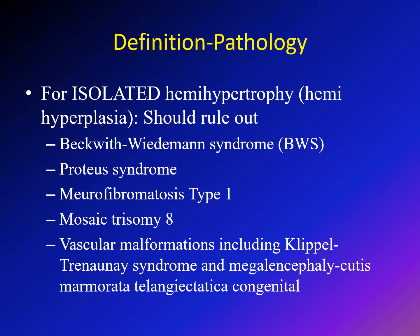To give the diagnosis of isolated hemihypertrophy or isolated hemihyperplasia, you need to first rule out Beckwith-Wiedemann syndrome, proteus syndrome, neurofibromatosis type 1, mosaic trisomy 8, and vascular malformations like Klippel-Trénaunay syndrome. These are conditions you need to exclude because they are also considered overgrowth syndromes.